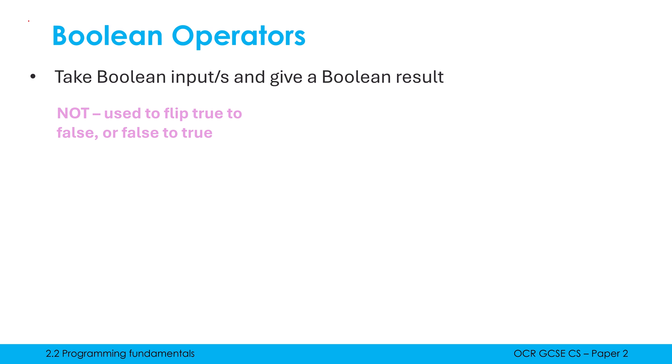NOT is used to flip true to false, or indeed false to true. It only takes in one input. We write the word NOT — it's capitalised in OCR ERL. We write our expression — it's usually not just the word true or false, normally it's an expression — and it flips it to be the opposite. So NOT true would be false.